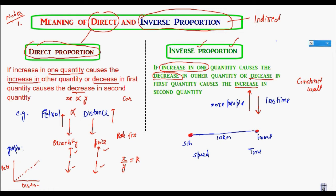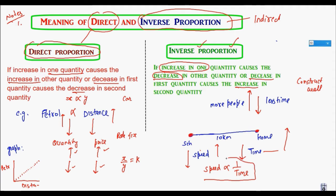Another example: between school and home, 10 kilometers distance is there. If I increase the speed of the car, the time taken will be less. Speed and time are both in inverse proportion. If I decrease the speed, the time taken will increase. This represents inverse proportion.